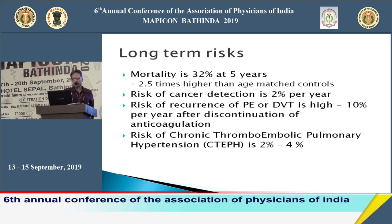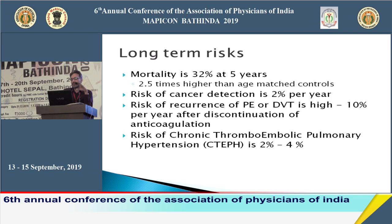Even after treatment of acute pulmonary embolism, there are long-term risks. Mortality at five years is 32 percent compared to age-matched controls. Fifty percent of cases are idiopathic. Cancer patients are also prone — risk of cancer detection is two percent per year. After discontinuation of anticoagulation, there is a ten percent risk of recurrent pulmonary embolism.